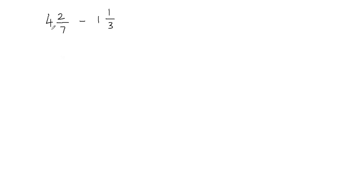To convert into a fraction, I'm going to multiply my whole number with the fraction's denominator. So 4 times 7 gives me 28, and then whatever you get, you add that to the numerator. So 28 plus 2 gives me 30 in my numerator, and we don't change the denominator, so the denominator is going to be 7.